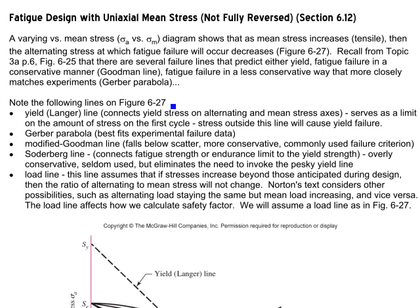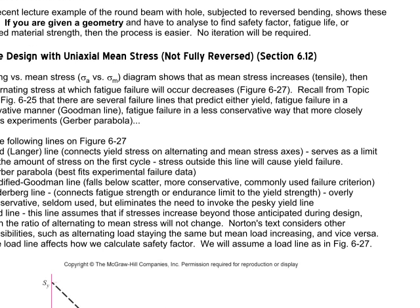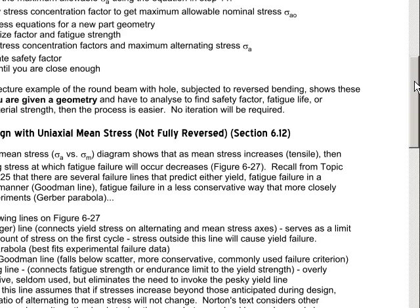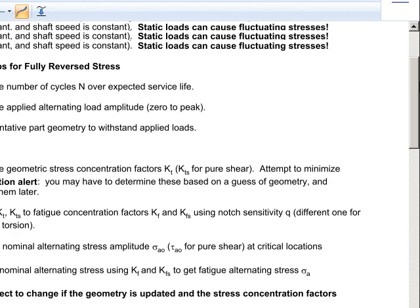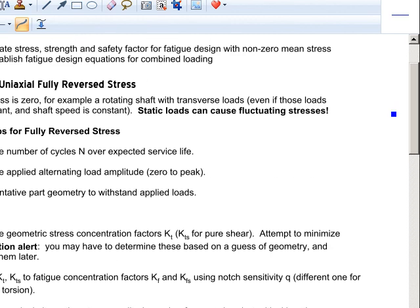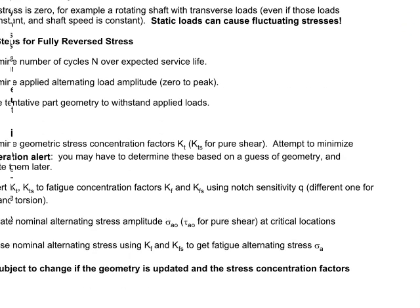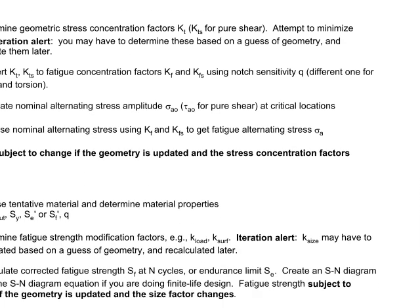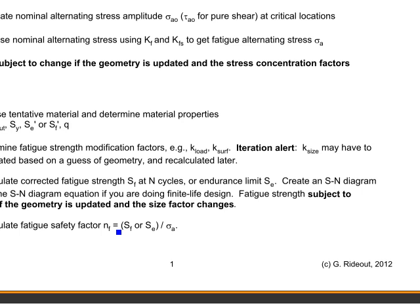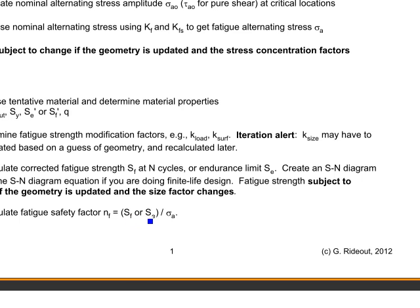In problems where you have to figure out the size, we often have to guess a size factor and guess a stress concentration factor, solve for the diameter, then update those factors, recalculate the diameter, and in one or two iterations you'll usually converge to a final answer. Our safety factor for fully reversed stress was simply: safety factor equals fatigue strength divided by alternating stress. Very simple.